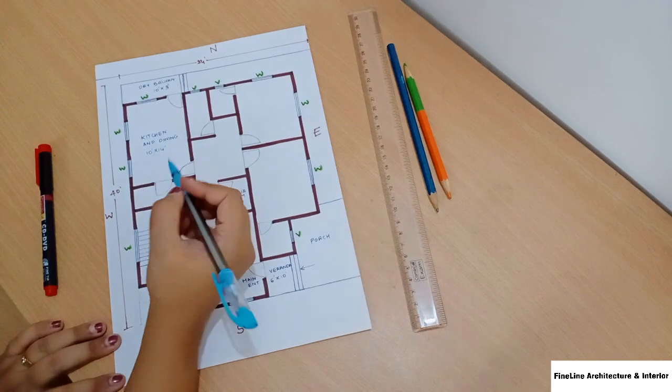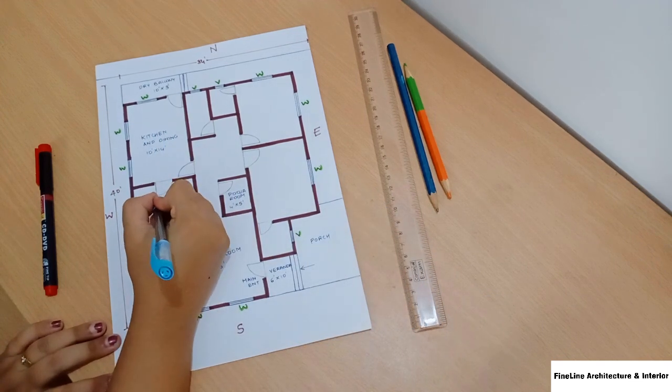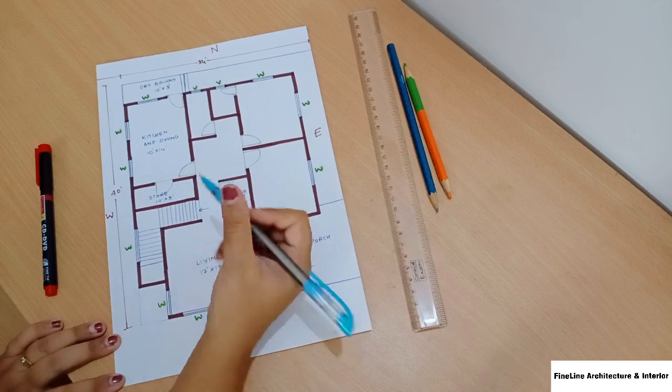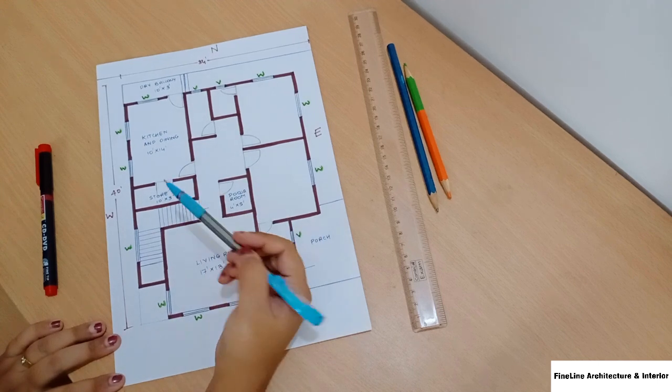The kitchen is attached to the store, which is 10 feet by 3 feet. If you want to expand the store, you can expand into the staircase area.